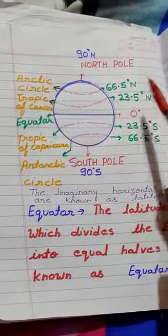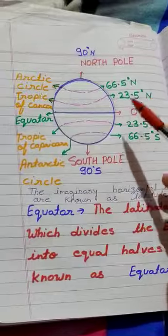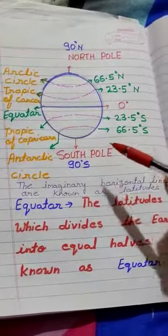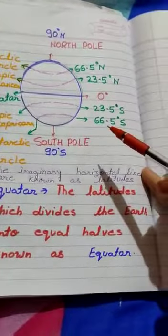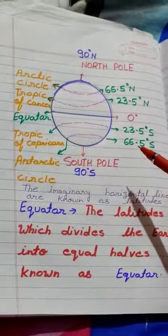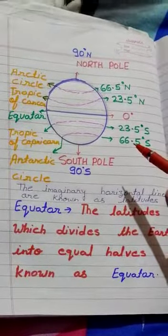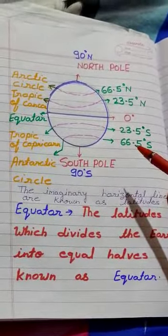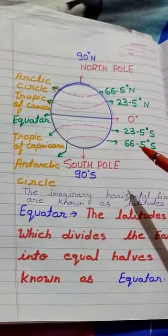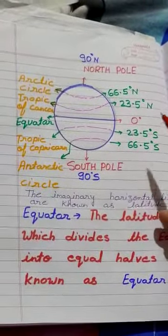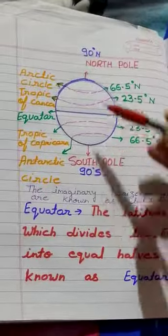As you know about globe, now I will explain about imaginary lines. Imaginary lines are a pattern of straight lines crossing each other to form many squares. We call this grid. There are two lines: first is latitudes.